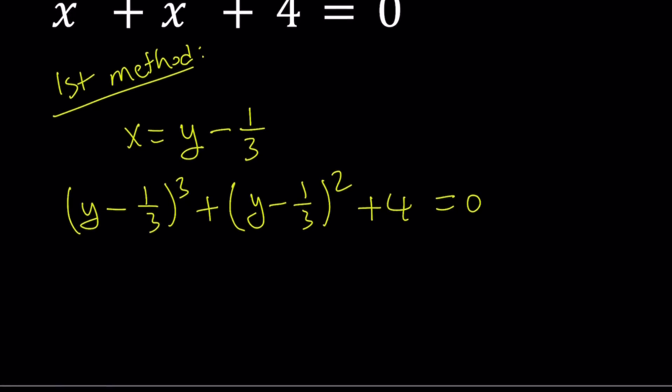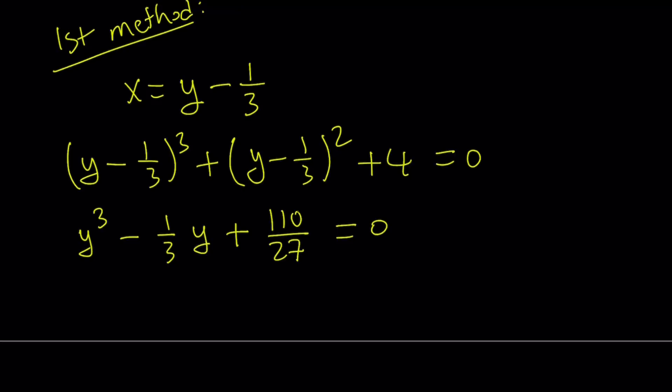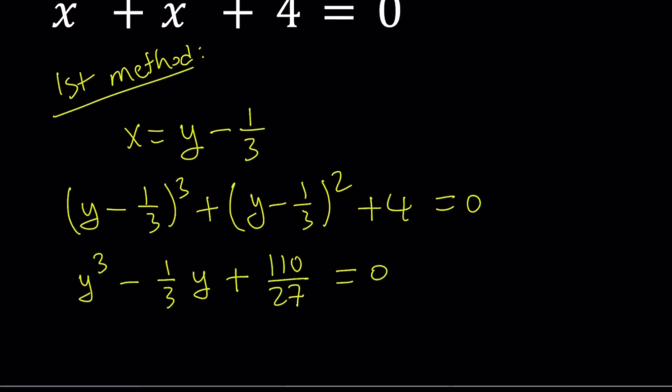I'm going to skip that part and give you the resulting cubic equation. By simplifying this, we get y cubed minus 1 over 3y plus 110 over 27 equals 0. I know that is such a weird fraction, but that's what we get. Now we don't have the y squared term, so we can use Cardano.